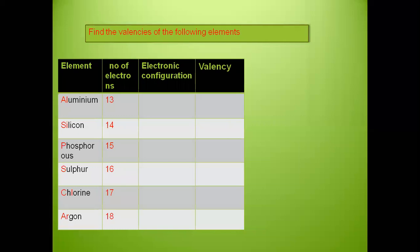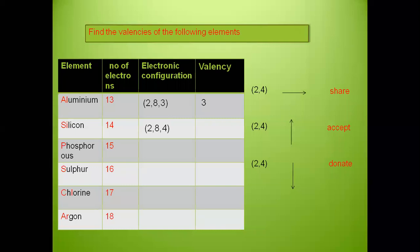For aluminium, the electronic configuration is 2,8,3, so the valency becomes 3. For silicon, atomic number 14, it is 2,8,4 so the valency is 4. For phosphorus, atomic number 15, the configuration is 2,8,5. The valency is not 5 but 3, because with more than 4 electrons in the last shell, it accepts 3 electrons to achieve the octet.